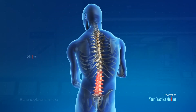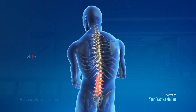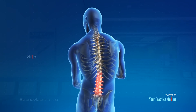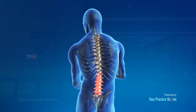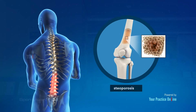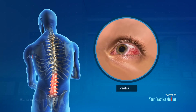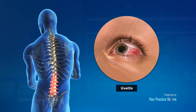Those with spondyloarthritis may also develop other conditions, such as osteoporosis, a weakening of the bones, uveitis, a kind of eye inflammation, and aortic valve inflammation.